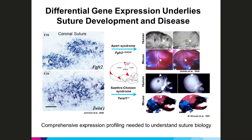Mutations in about 80 genes have been found to cause craniosynostosis or other suture defects in humans. However, the genetic defect in the majority of human craniosynostosis cases, which are non-syndromic, is not known. Likewise, the full complement of suture gene expression is also not known, and cataloguing such expression will greatly aid in understanding normal and pathologic suture development.